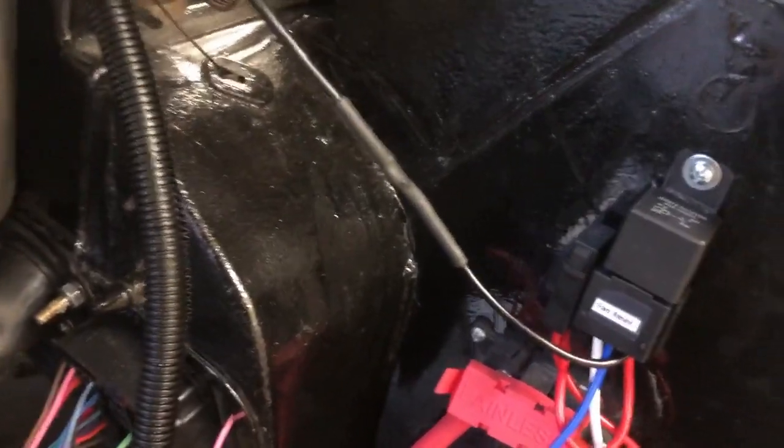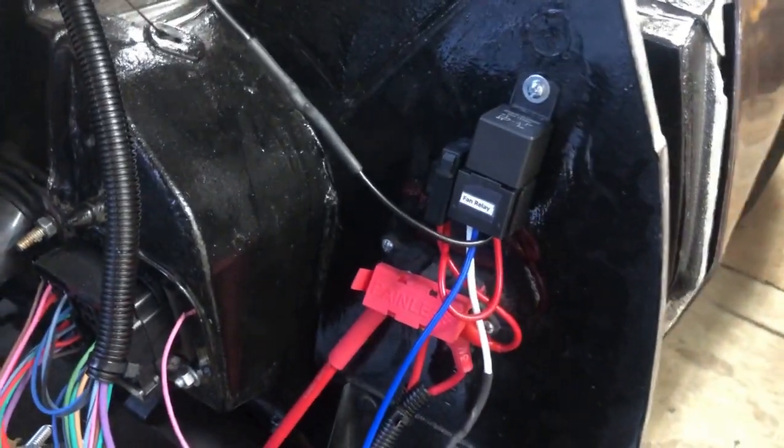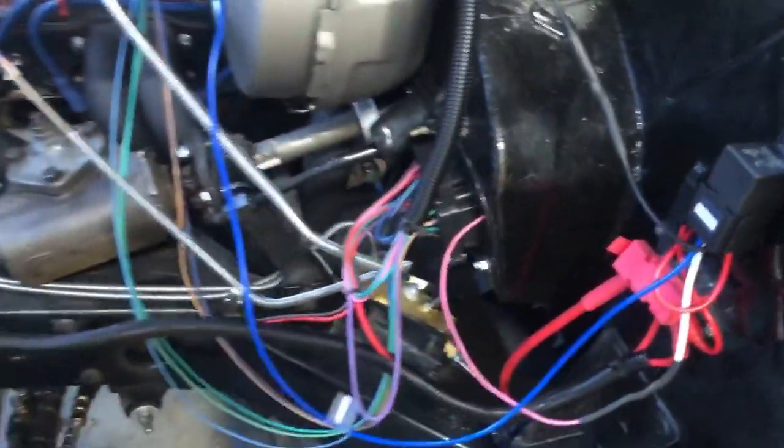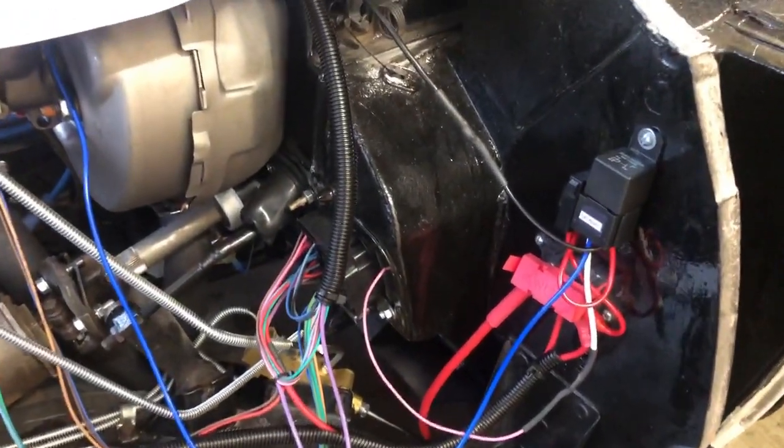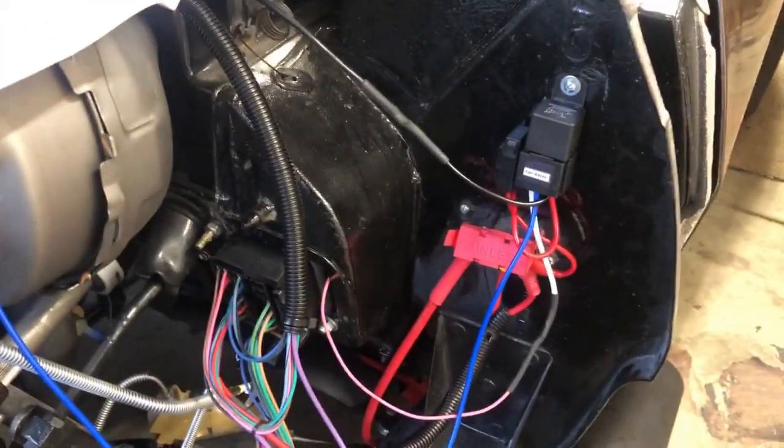We will probably have two or three more relays. I chose this position on the firewall mostly because it's going to be protected. We're going to have the front clip right there, and then there's a big fender well right here. So it should be pretty protected from the elements. Not that you ever drive your Corvette in the rain, right? But anyways, so it should be pretty protected right there.